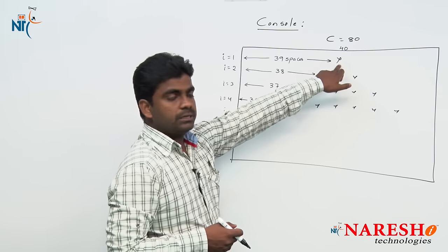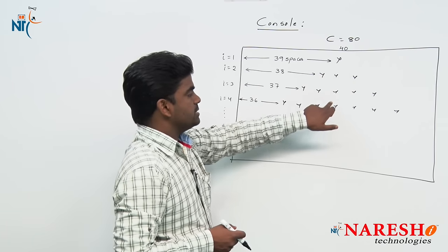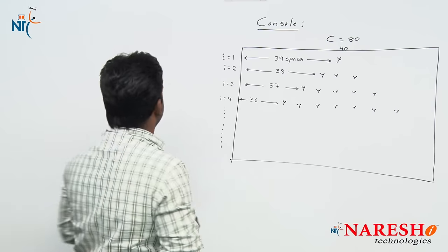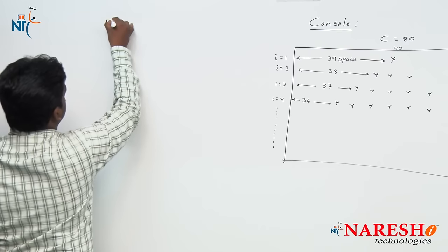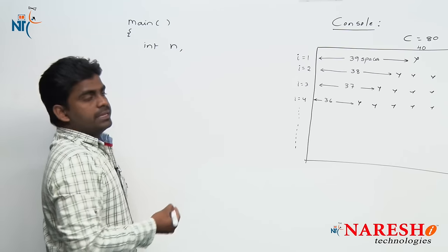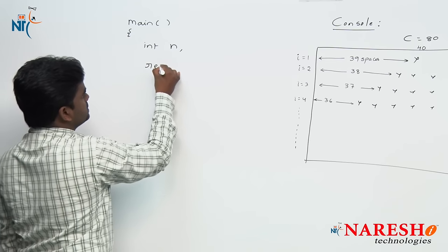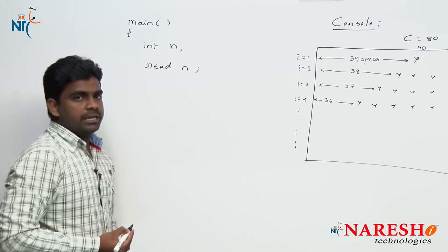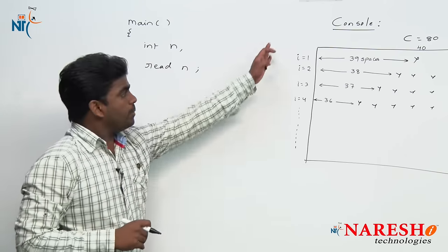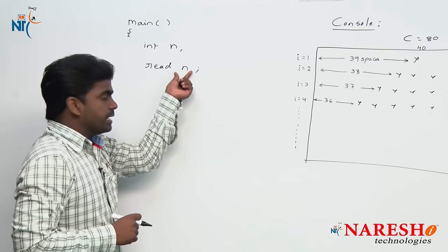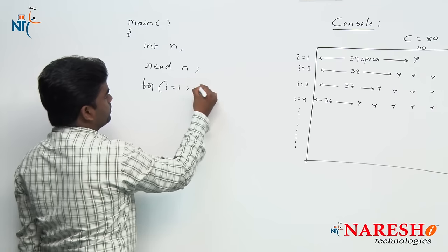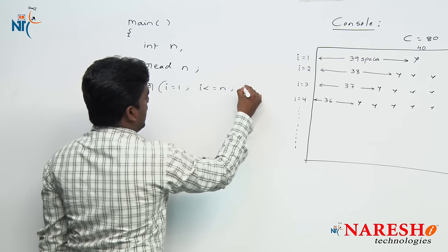First 1 star, next 3 stars, next 5 stars, next 7 stars, next 9 stars — and so on. We read how many number of rows. In the main function we declare one variable n and read its value. The outer for loop should repeat n times: i starts at 1, i is less than or equal to n, i plus plus.